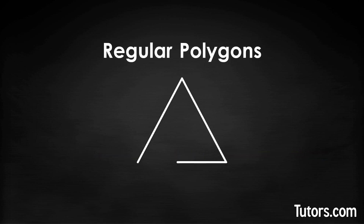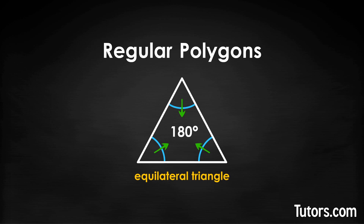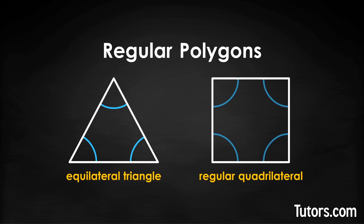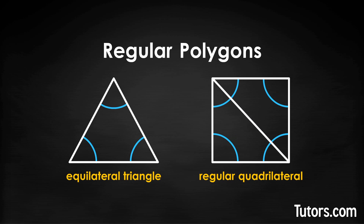The regular polygon with the fewest sides — three — is the equilateral triangle. Triangles are easy: their interior angles add to 180 degrees. Likewise, a square, a regular quadrilateral, adds to 360 degrees because a square can be divided into two triangles. The word polygon means many angles, though most people seem to notice the sides more than the angles.